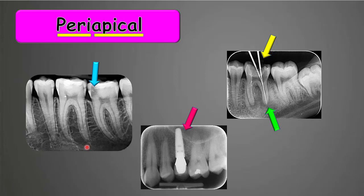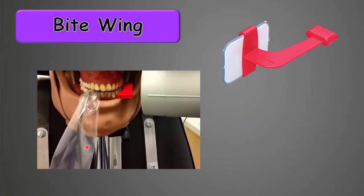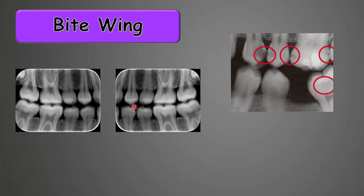Next we have bite wing radiography. It has a wing on the film holder that you bite on while taking the x-ray, covering the crown portion of the top and bottom teeth together. When you look at it, you see the crowns of both arches — upper and lower. We can have left and right side views, and you do not see the roots.